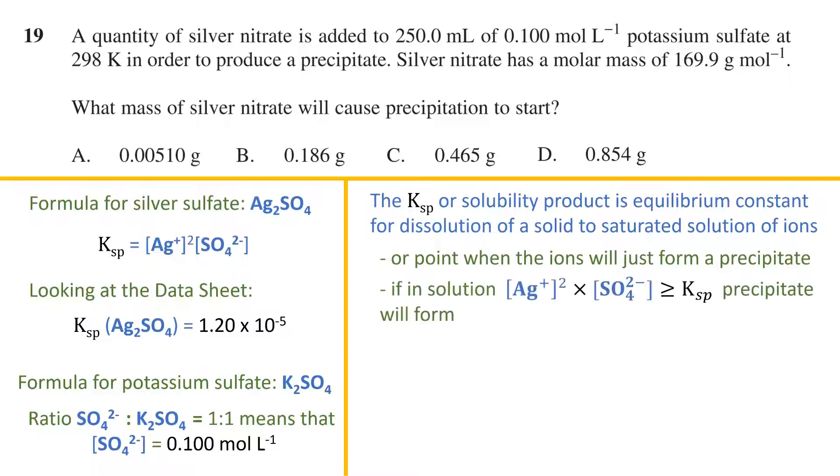Therefore if we have a solution where the product of the concentration of the silver ion squared multiplied by the concentration of the sulfate ions is equal to or greater than the Ksp value then a precipitate of silver sulfate will form. If we want to know the point when adding just enough silver nitrate will form a precipitate then we just set the equation to be equal.